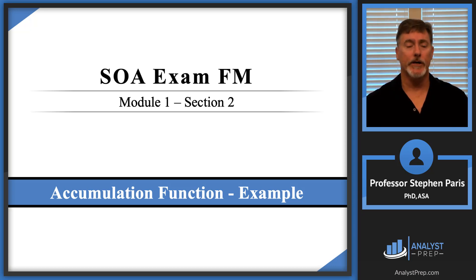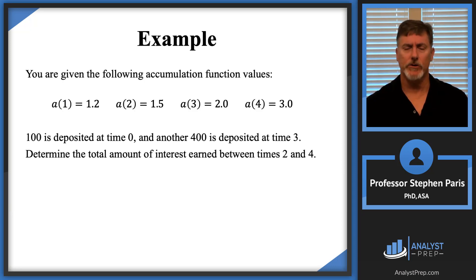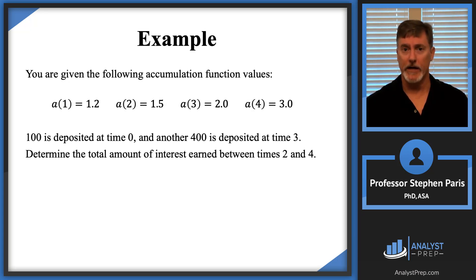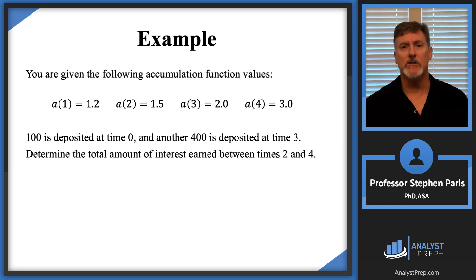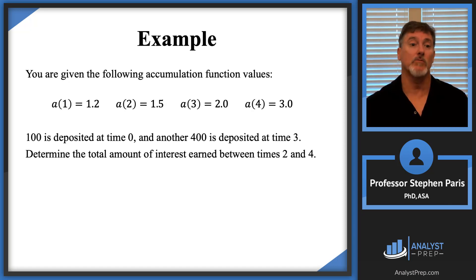In this video we're going to look at a Module 1, Section 2 example on accumulation functions. The example: you're given the following accumulation function values — A(1), A(2), A(3), and A(4) are 1.2, 1.5, 2, and 3 respectively. $100 is deposited at time 0 and another $400 is deposited at time 3, and we're tasked with determining the total amount of interest earned between times 2 and 4.